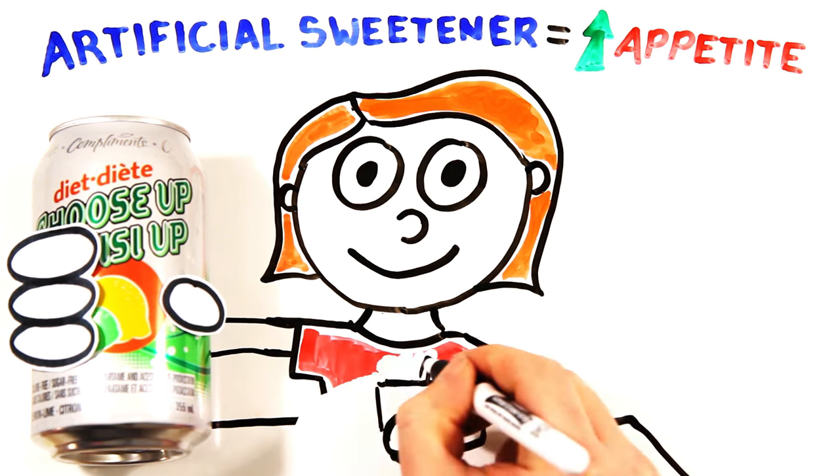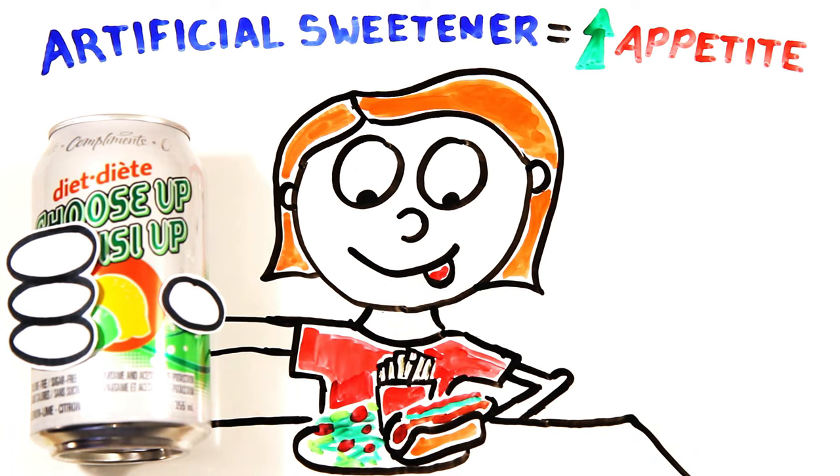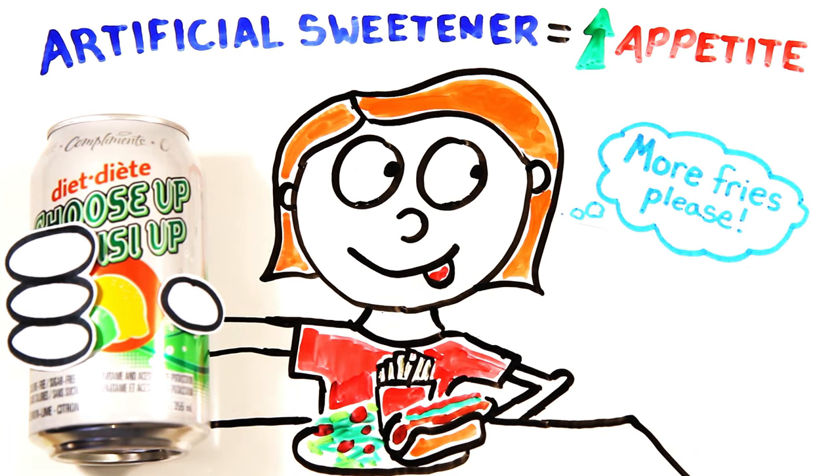Not to mention many diet drinkers allow themselves to eat more because they believe they've already reduced their calories, thinking, I'm having a diet soda so I can have a large fry with my burger. But soft drinks can also age us.